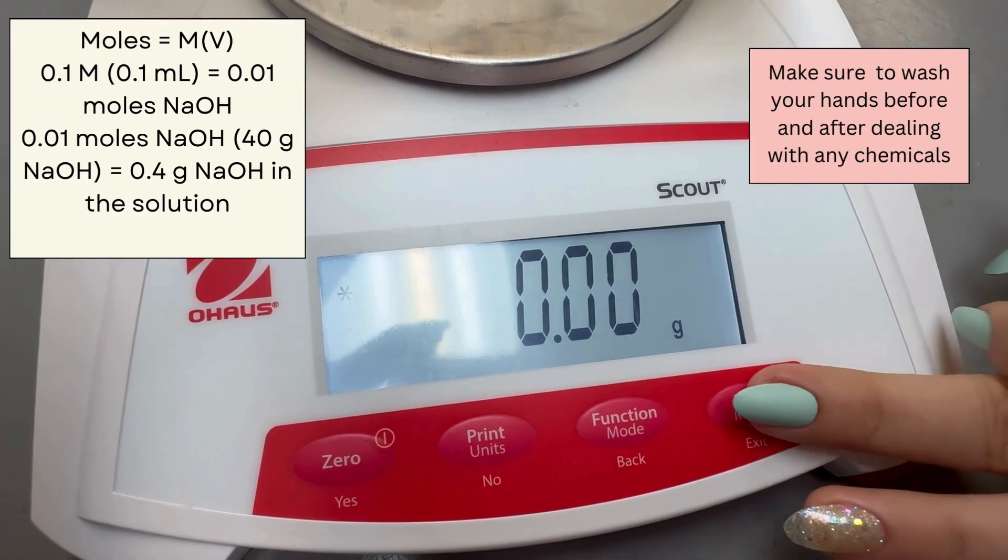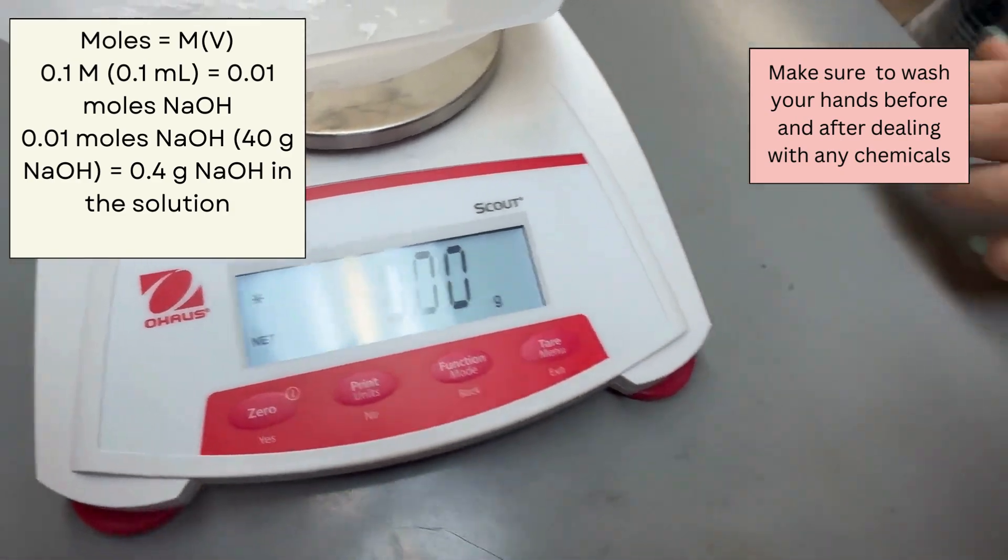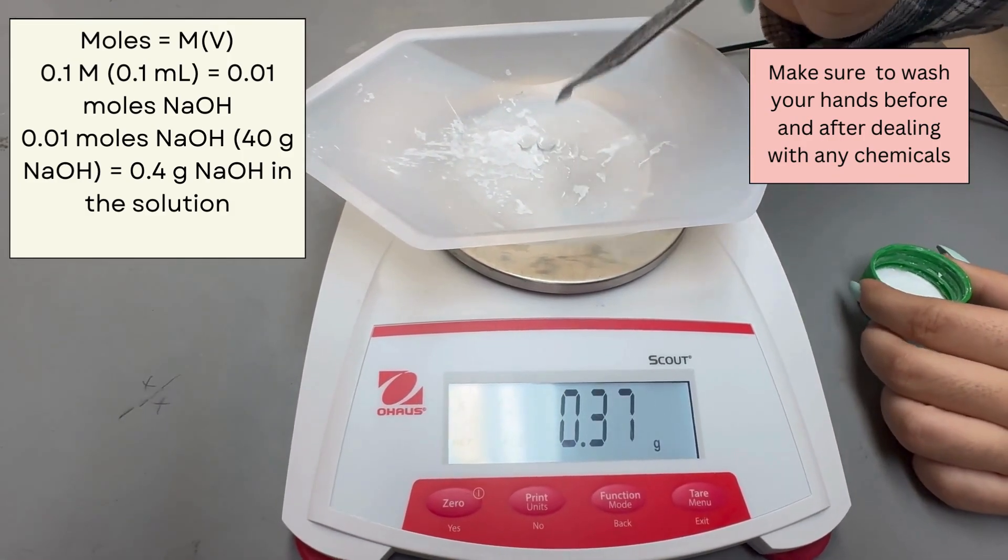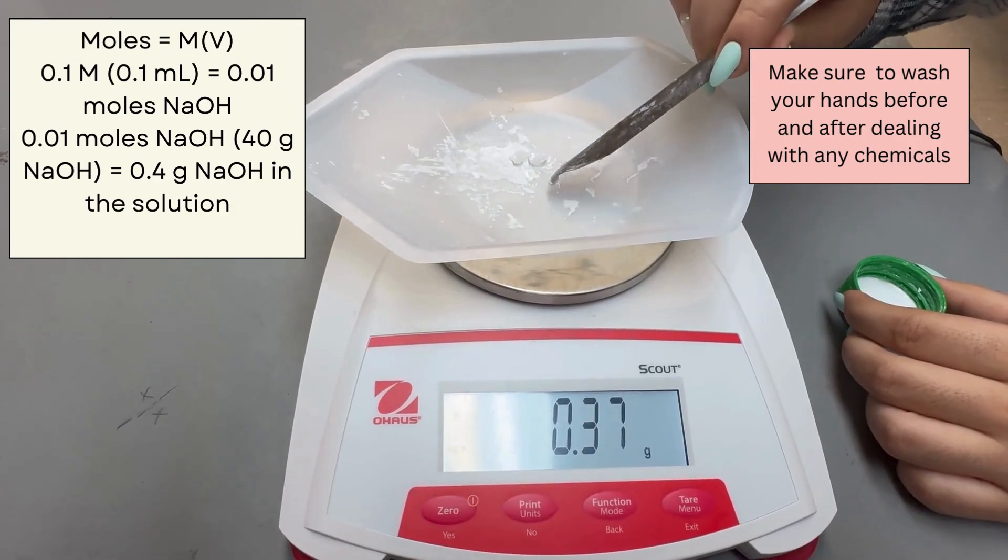Calculate the grams of NaOH needed in the solution using the moles equals M times V formula displayed on screen. Don't forget to tar the scale before measuring NaOH.